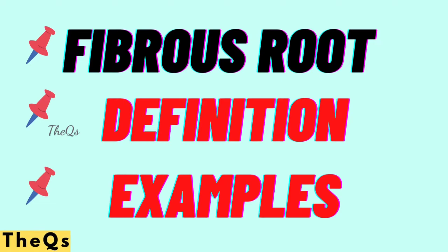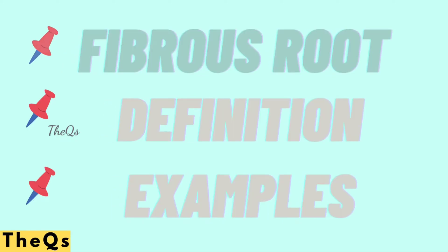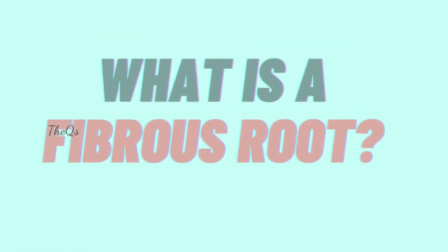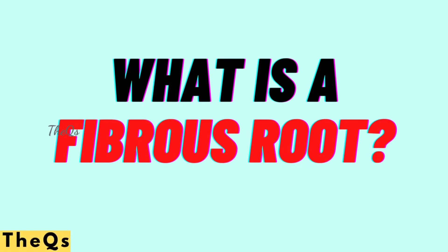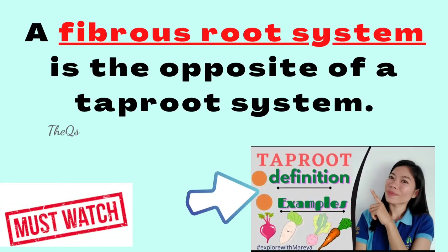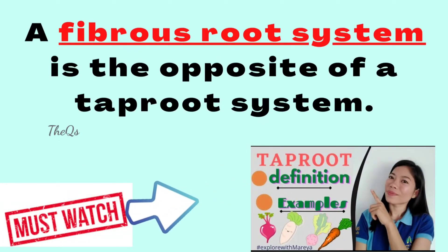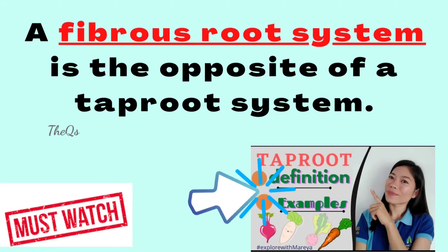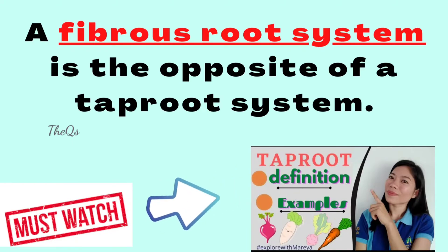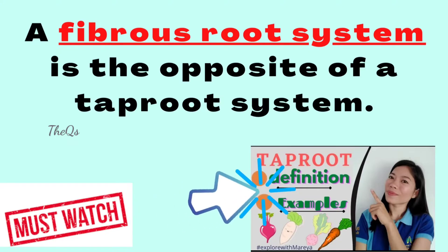Hi, this is Teacher Maria. Today we will be talking about fibrous roots — its definition and examples. A fibrous root system is the opposite of a taproot system. Try to watch the video about taproot definition and examples — search it in my account and you will learn more.